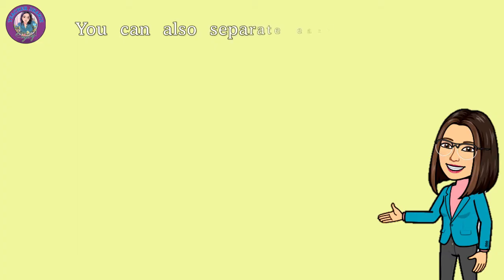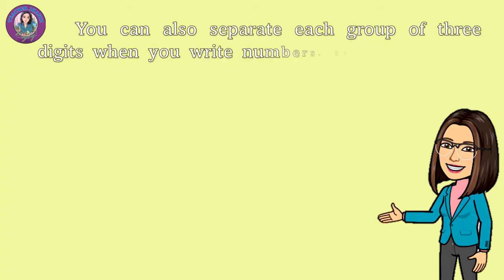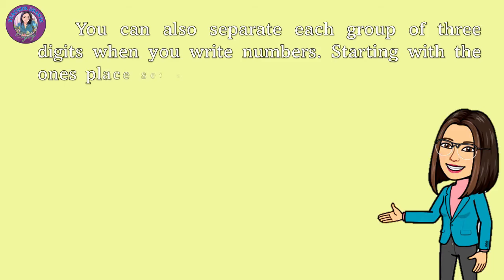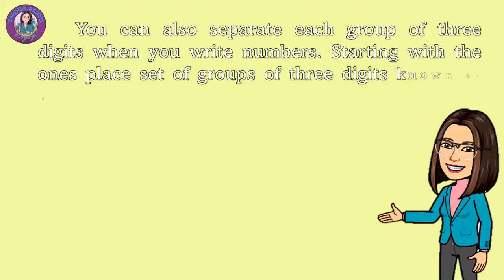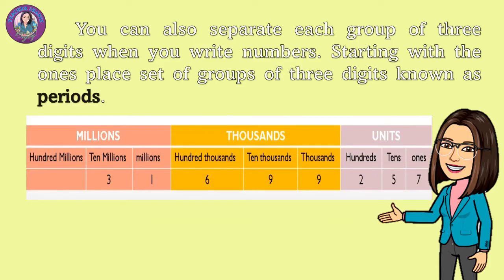You can also separate each group of 3 digits when you write numbers, starting from the ones place. These groups of 3 digits are known as periods. Look at this chart. In the units period, we have the ones, tens, and hundreds. In the thousands period, we have thousands, ten thousands, and hundred thousands. In the millions period, we have millions, ten millions, and hundred millions.